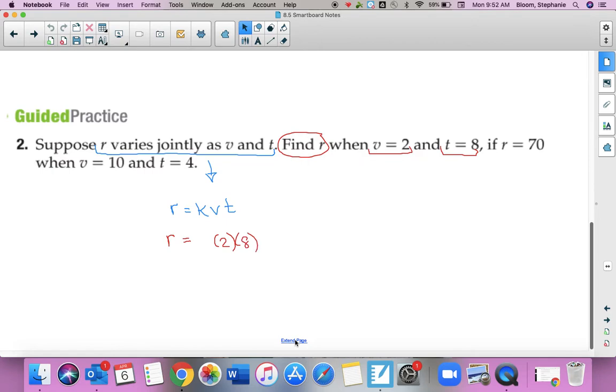The issue there is we don't know that constant of variation yet. So now we're going to move down and see how we can find it. So if R is 70, when V is 10 and T is 4, now can we find what that constant of variation would be? So 40K is equal to 70. If I divide both sides by 40, I know that K is equal to 7 fourths.